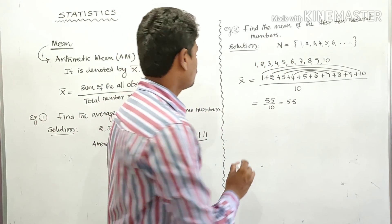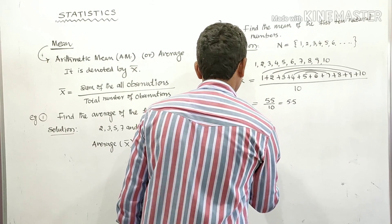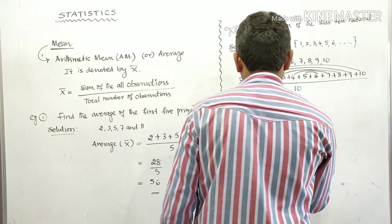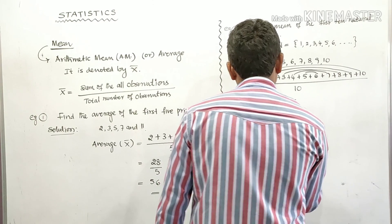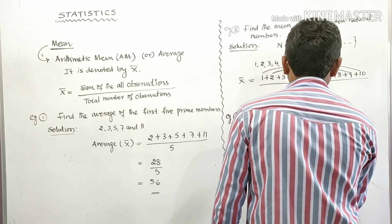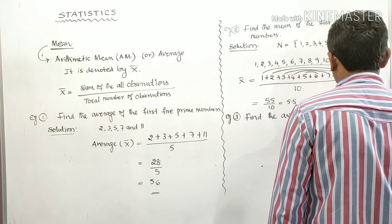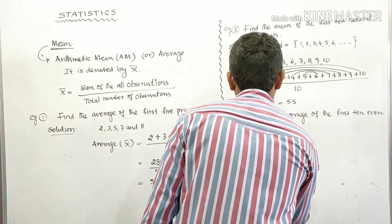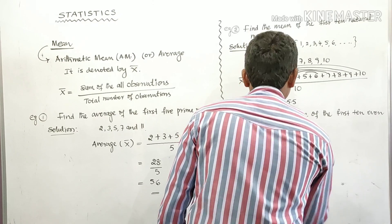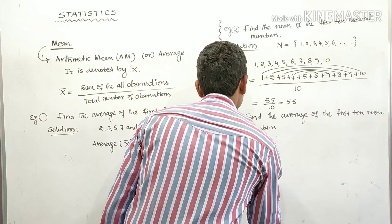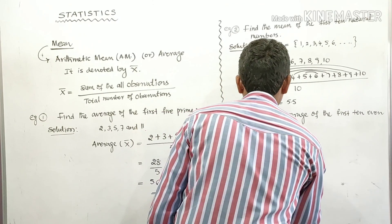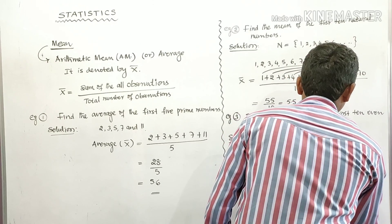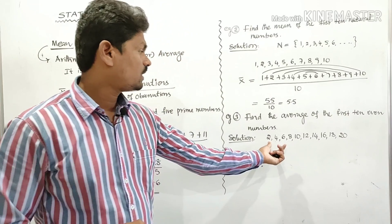Example three: Find the average of the first ten even numbers. The first ten even numbers are 2, 4, 6, 8, 10, 12, 14, 16, 18, and 20.